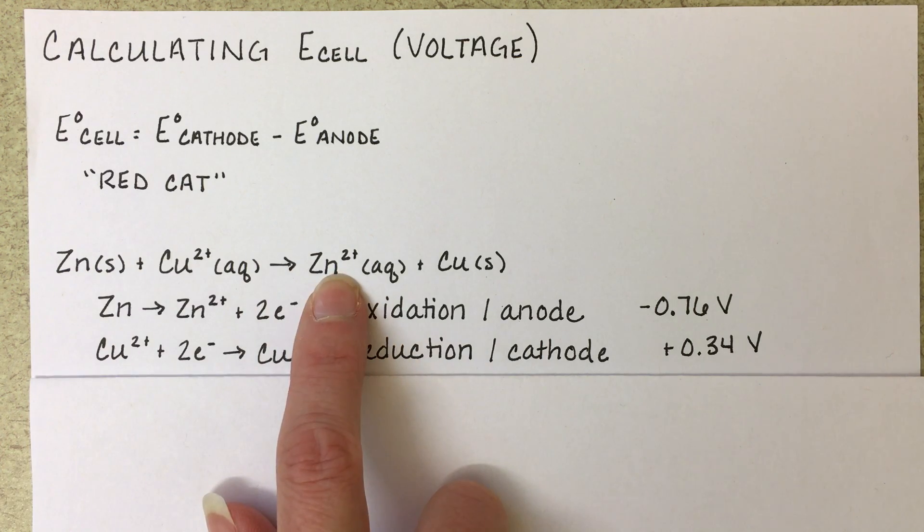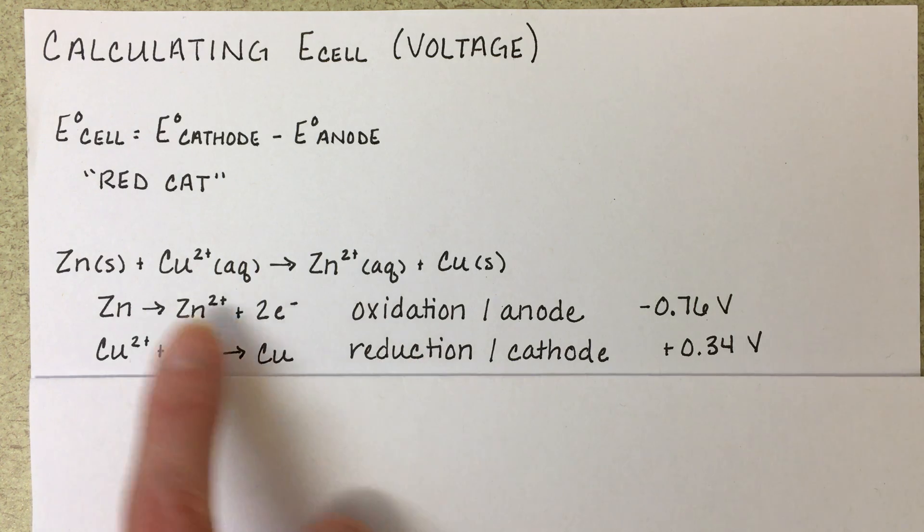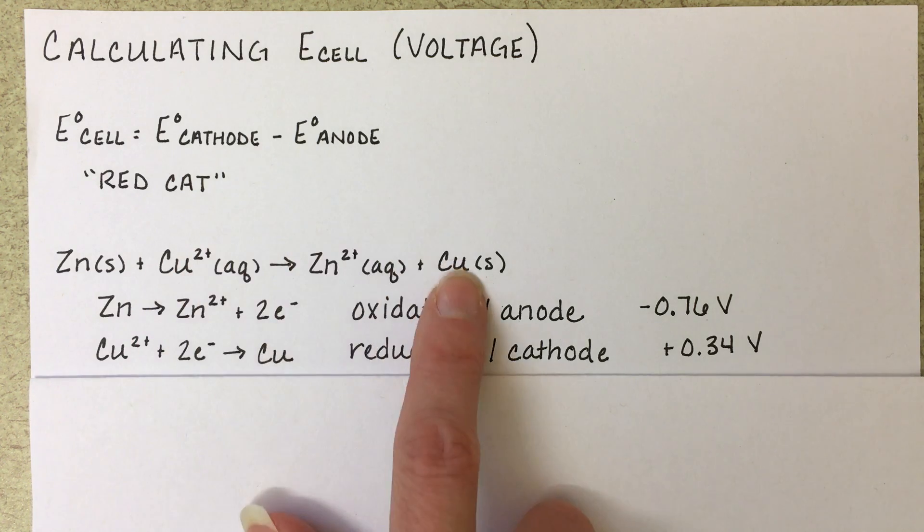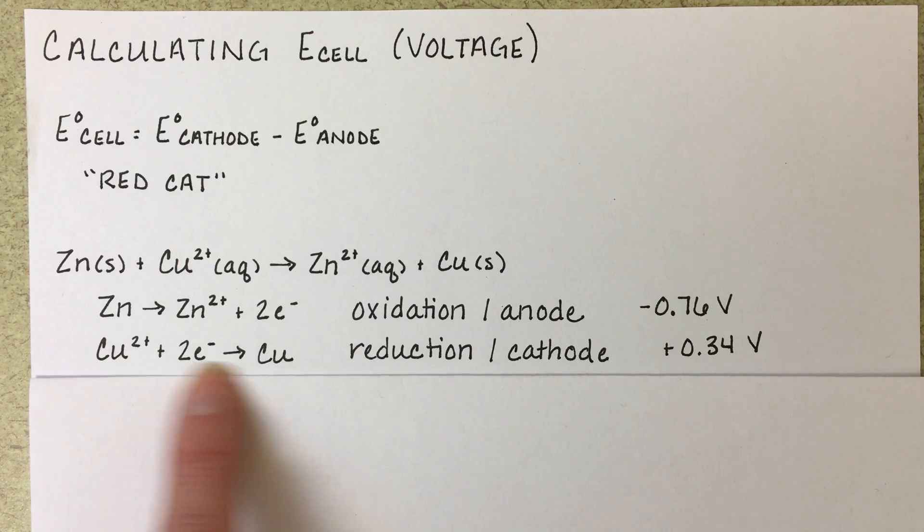Zinc going to zinc-2+, and losing two electrons, which is an oxidation reaction. And copper-2+, going to copper-0, picking up two electrons, which is a reduction.